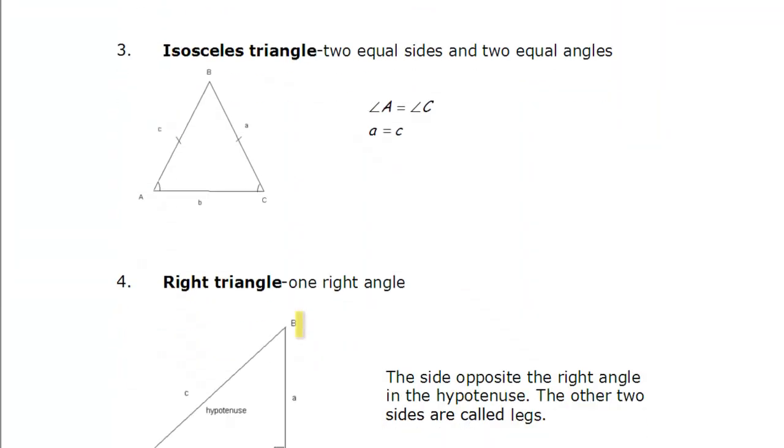We also have isosceles triangles. An isosceles triangle has two equal sides. And if these two sides are equal, then the angles opposite them are also equal. So we have two equal angles. And again, that's what those symbols on that sketch mean. So two equal sides, two equal angles, isosceles.